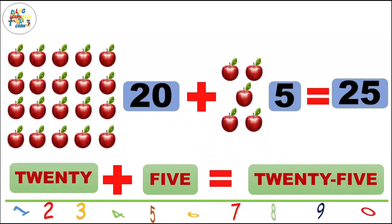20 plus 5 is equal to 25. T-W-E-N-T-Y, twenty, F-I-V-E, five. Once more: T-W-E-N-T-Y, twenty, F-I-V-E, five. 25.